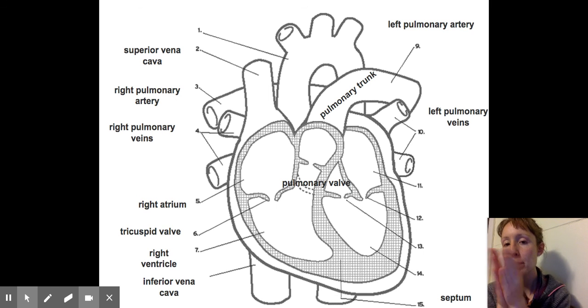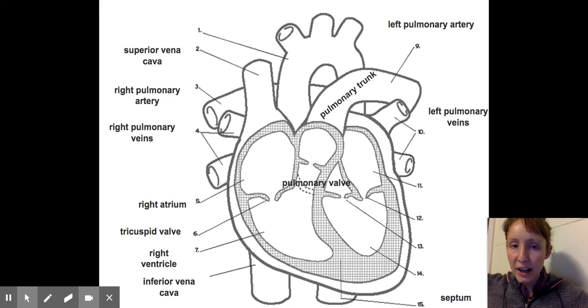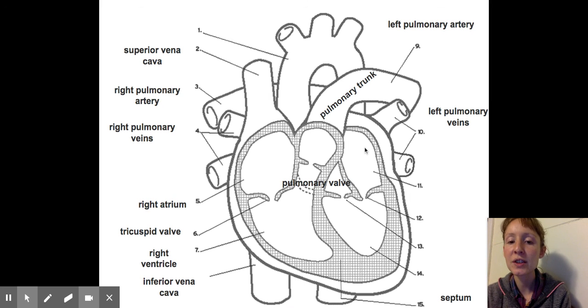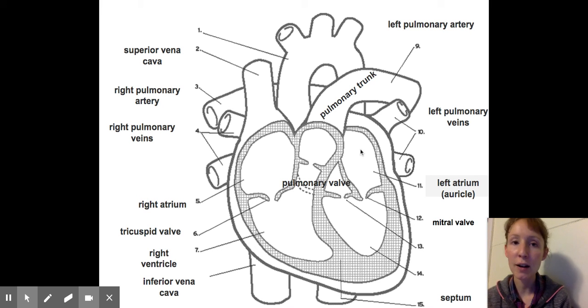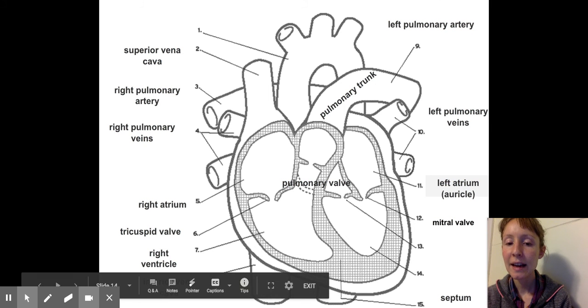It comes back in through the pulmonary veins, shown here as number four and number ten. So the pulmonary trunk branches into the left pulmonary artery and the right pulmonary artery. Those go to the lungs and the blood gets oxygenated and it flows back into the heart through the pulmonary veins. And this is where it enters the left atrium. The left atrium receives the blood from the lungs. Then it's got to pass through a valve into the left ventricle. That valve is going to be the mitral valve or the bicuspid valve. Then it flows right into this chamber, which should be the left ventricle.